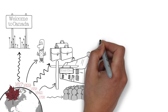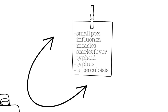In the 18th and 19th century, the most common health problems were smallpox, influenza, measles, scarlet fever, typhoid, typhus, and tuberculosis.